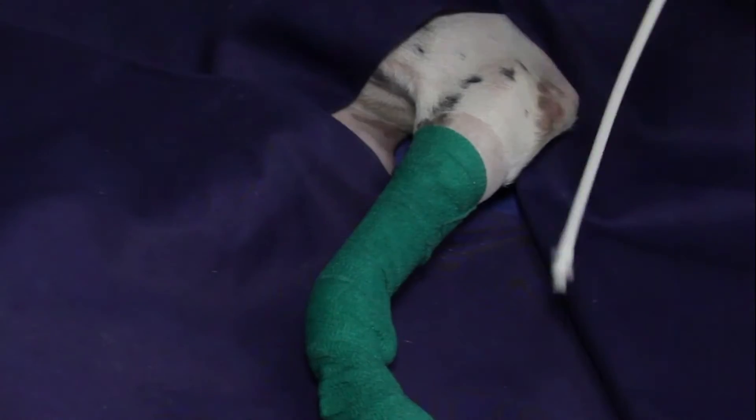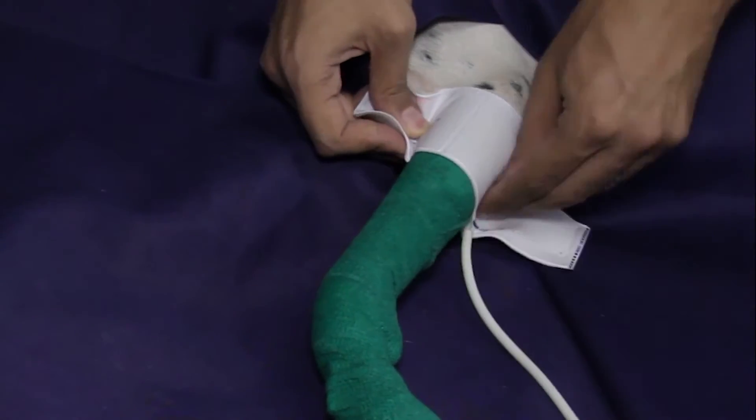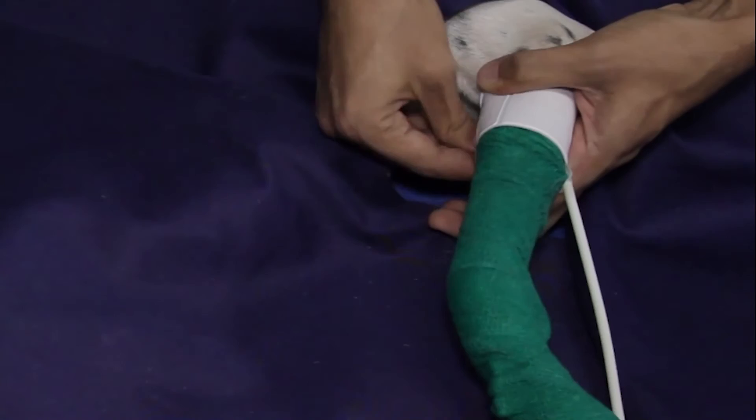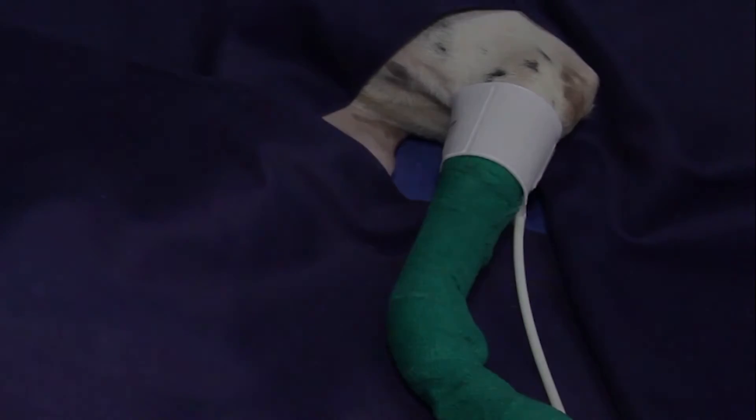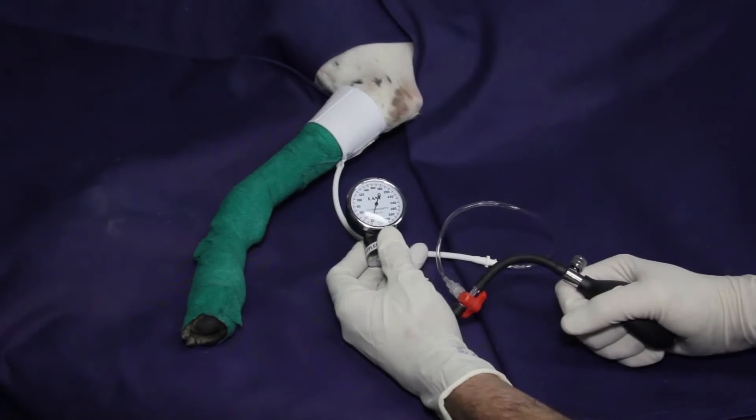A pneumatic tourniquet is applied to the proximal limb. This will allow for greater control over the amount of pressure applied to the limb, thereby minimizing the risks and discomfort to the animal.